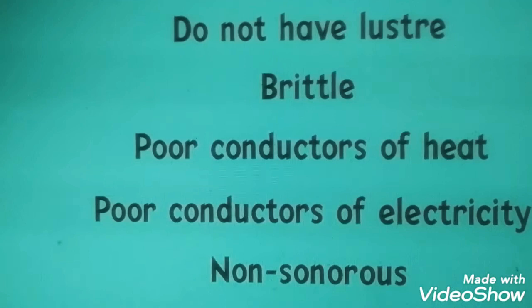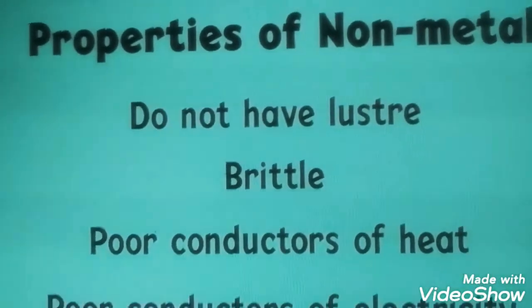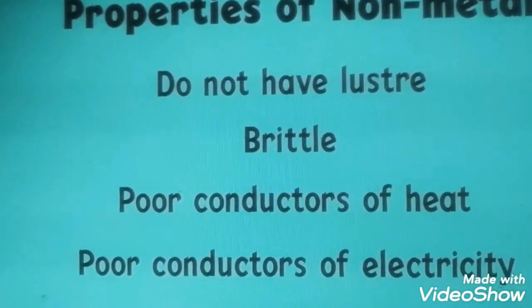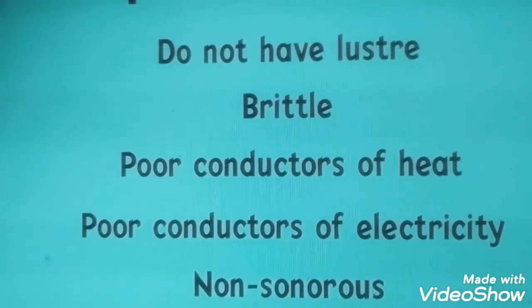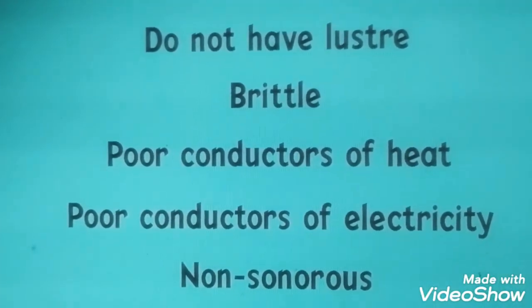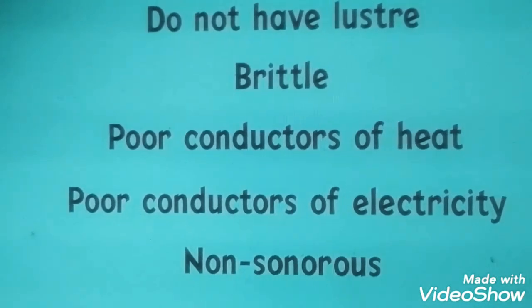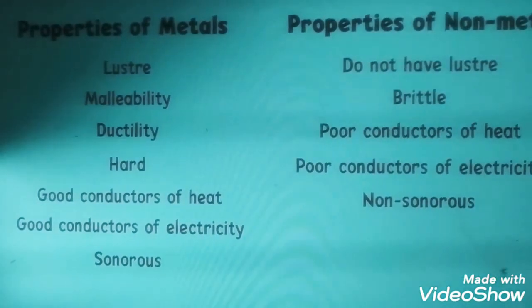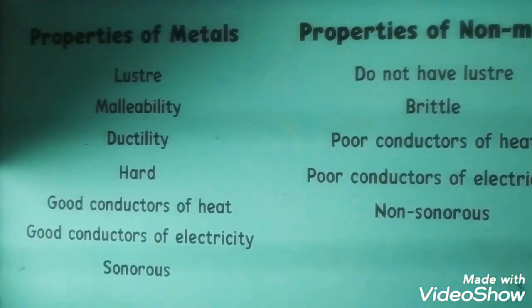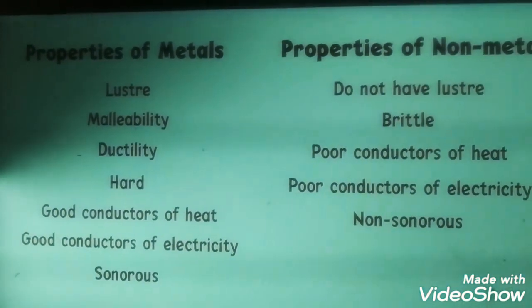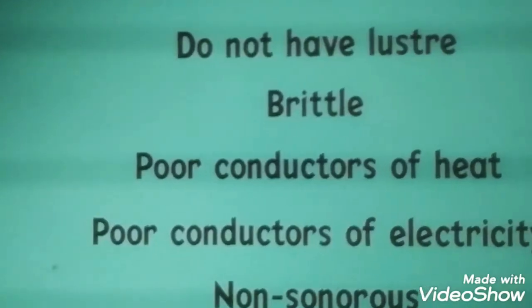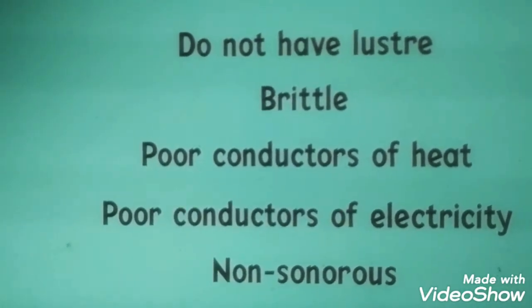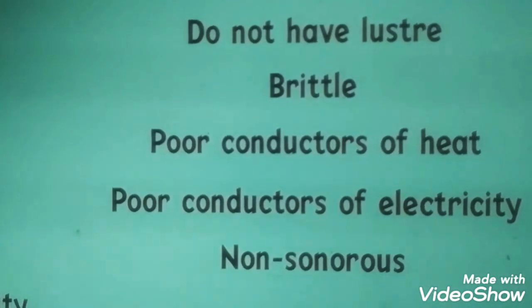So what are the properties of non-metals? They do not have luster. They are brittle. They are poor conductors of heat and also poor conductors of electricity. And they are non-sonorous. So when we compare metals and non-metals, these are the variations between them. But only with these physical properties we cannot decide whether they are metals or non-metals — we should have something else to know deeply about them.